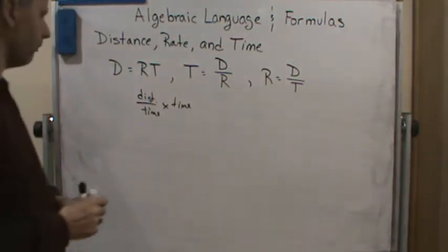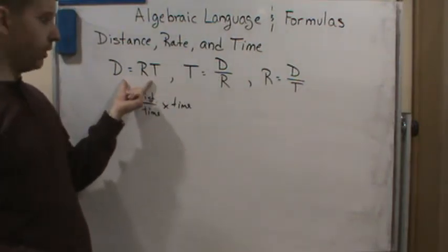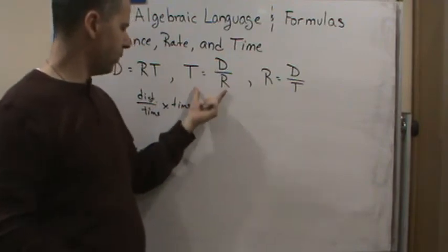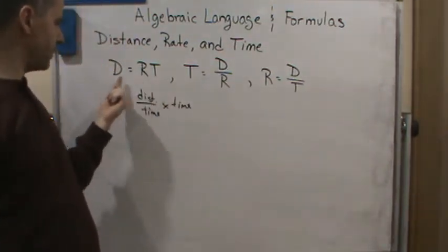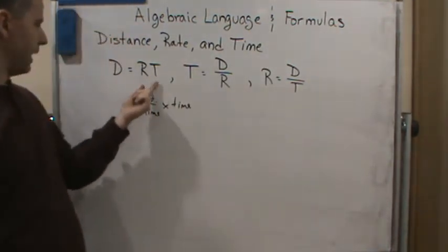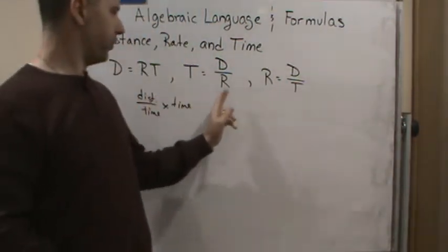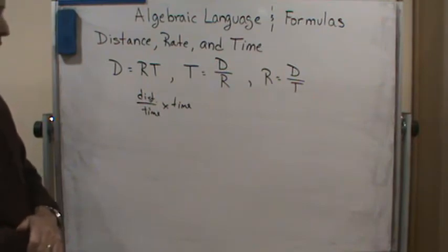Now, distance equals rate times time. So that's the typical one we start with. But you can change these around and you can solve it for this one. You can solve it for T. So if you just divide both sides by R, you get this one. Or if you divide both sides by T, you get this one. So these three formulas are the same formula. They're just solved for different variables.